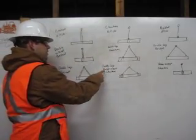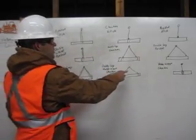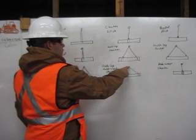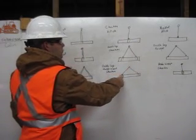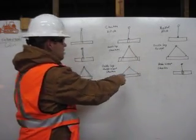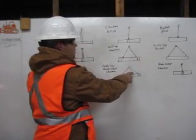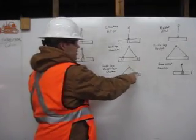Here, we have a double leg, double wrap choker, which means we have two legs where the first leg comes around, double wraps, and attaches to itself. Same thing on the other side. Comes around, wraps around twice, and attaches to itself.